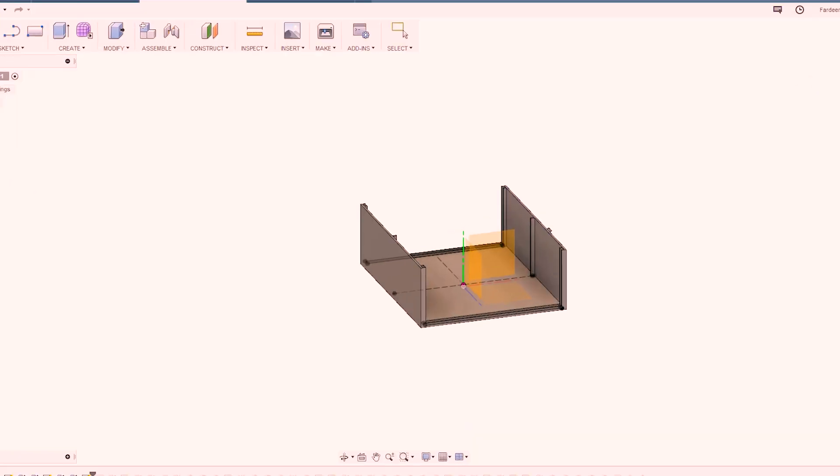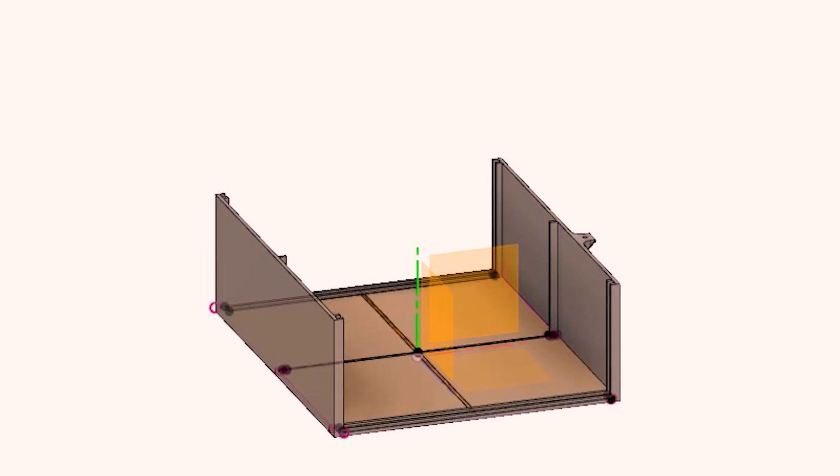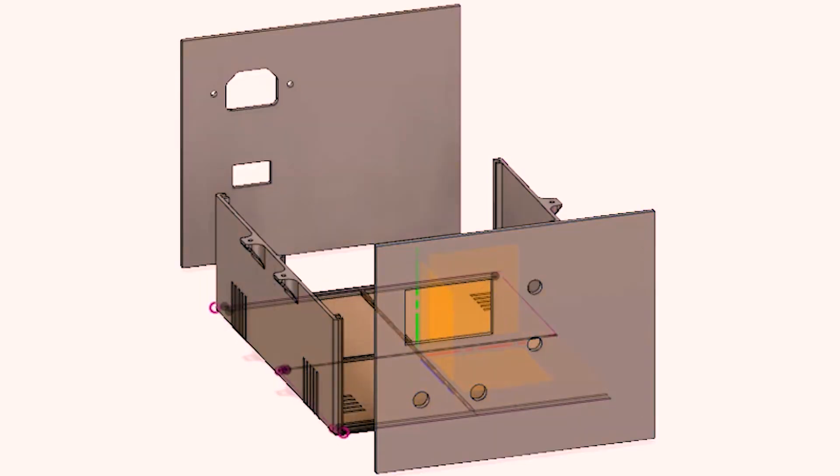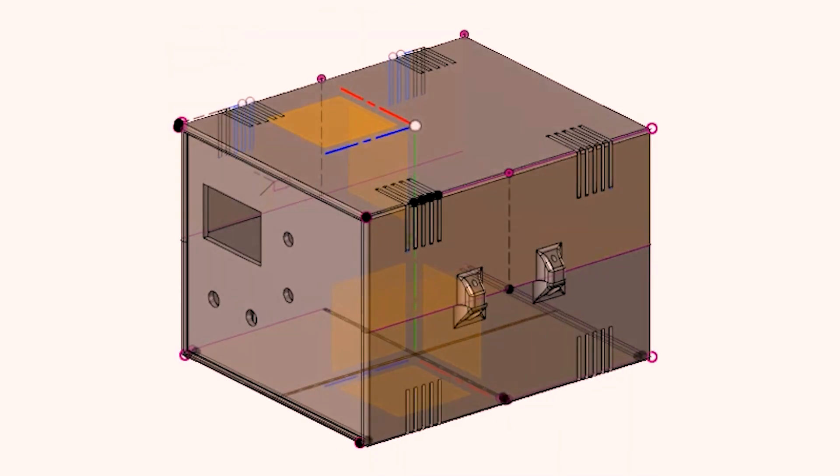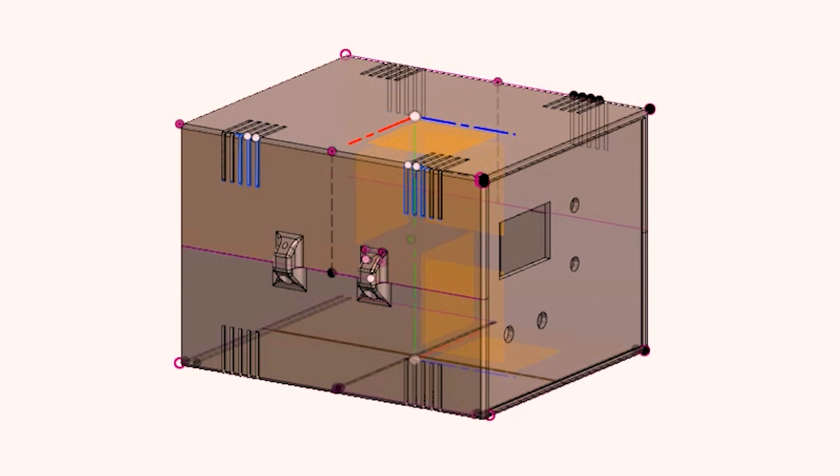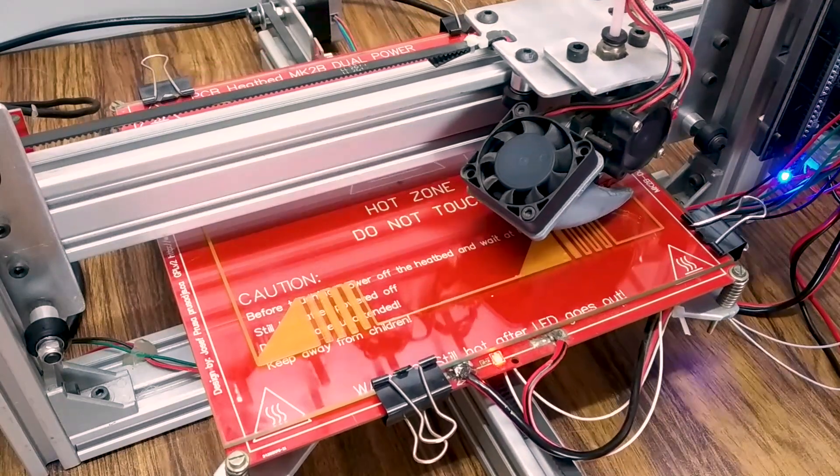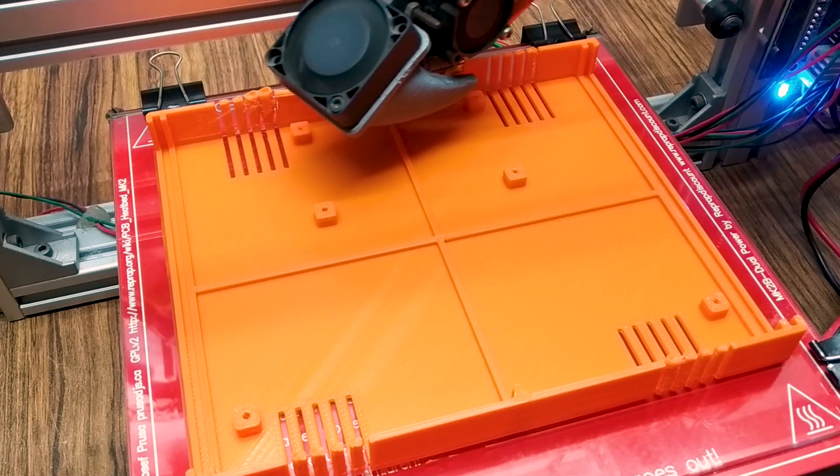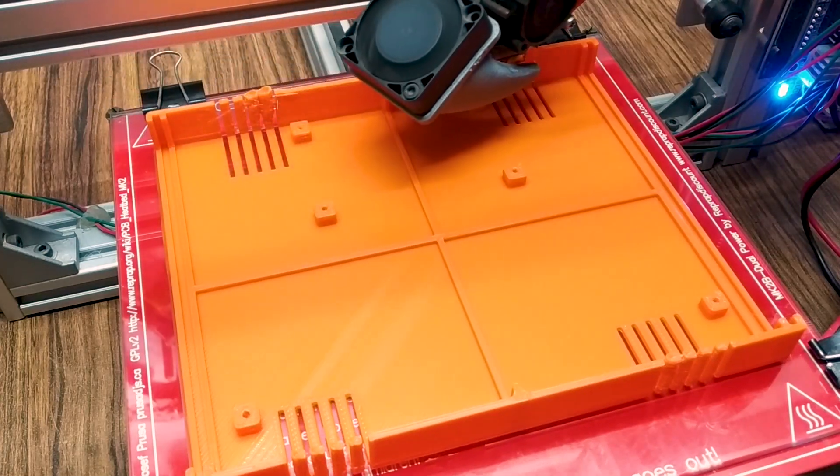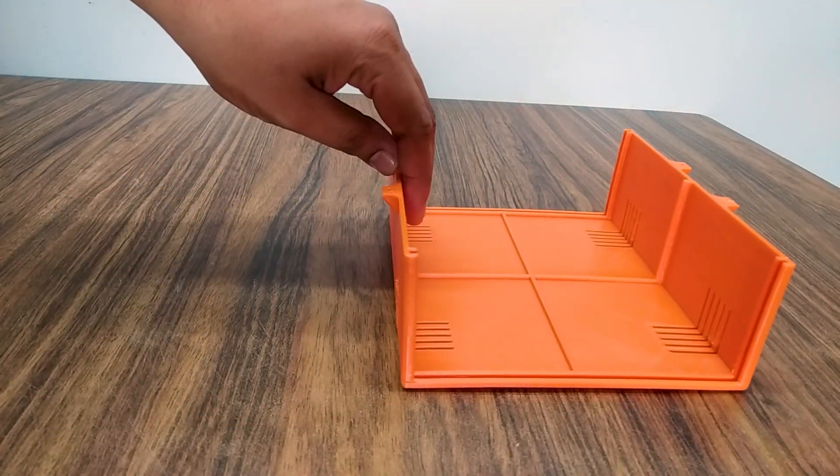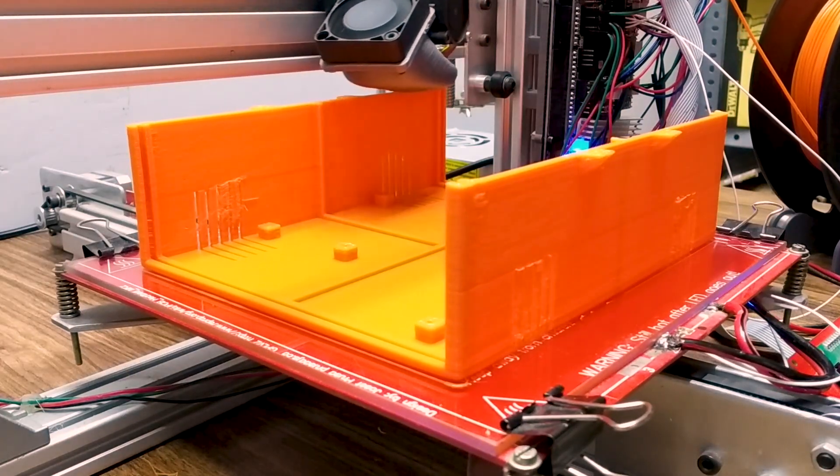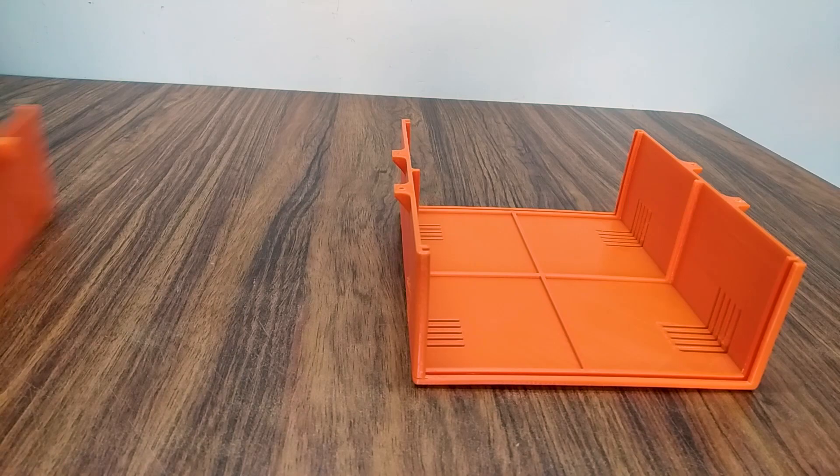I measured the dimensions of the parts and designed this case in Fusion 360. The files are in the description below. I printed it with my DIY 3D printer. The top and bottom parts were printed in orange PLA and front and back panels were printed in black ABS. It took roughly 20 hours for all the parts to print.